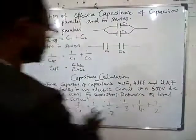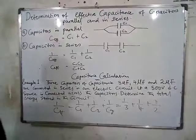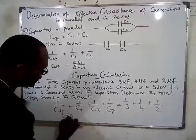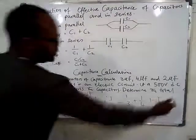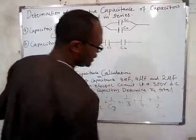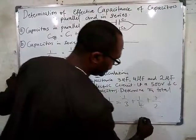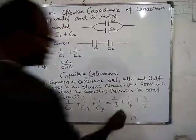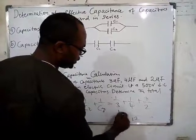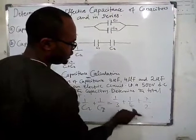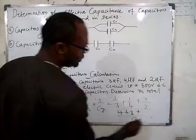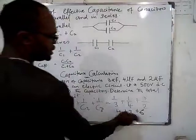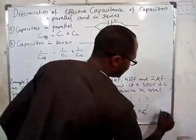First, determine the effective capacitance. We need to add 1/3 plus 1/4 plus 1/2. The LCM of 3, 4, and 2 is 12. So: 12/3 = 4, giving 4×1 = 4; 12/4 = 3, giving 3×1 = 3; 12/2 = 6, giving 6×1 = 6. Adding: 4 plus 3 plus 6 equals 13.